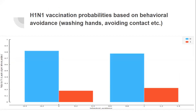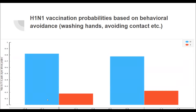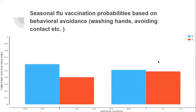H1N1 vaccination probabilities based on behavioral avoidance — washing hands, avoiding contact, etc. They produced a graph examining tendencies of people to get vaccinated with respect to the precautions they take to avoid getting sick. Factors such as personal hygiene and avoidance of contact reduce the incidence of disease. The graph shows that people who pay attention to personal hygiene have a 0.2 probability of getting the H1N1 vaccine.